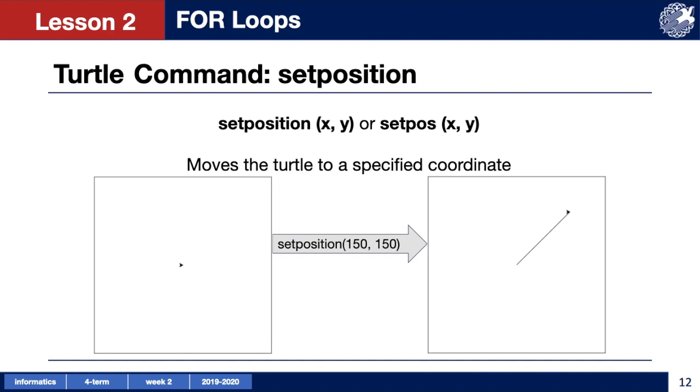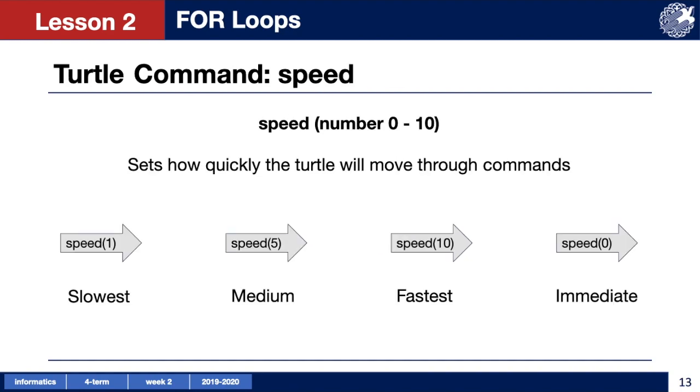We have another command that doesn't have to do with moving our turtle but will make it a lot easier for us to solve larger problems. That's the speed command. You can call this command at the beginning of your code to set the speed for the entire program or call it again in the middle of your program to just slow down or speed up a certain section of your code. To use the speed command you type a number from 0 to 10 in parentheses. A speed 1 is the slowest and speed 10 is very fast and 0 is almost immediate.